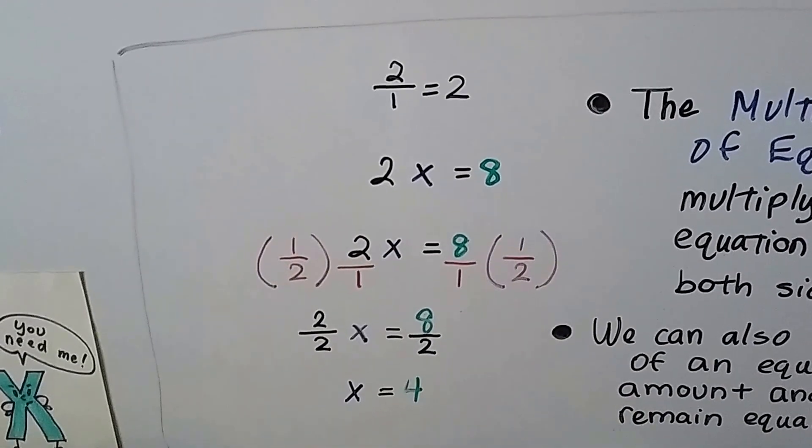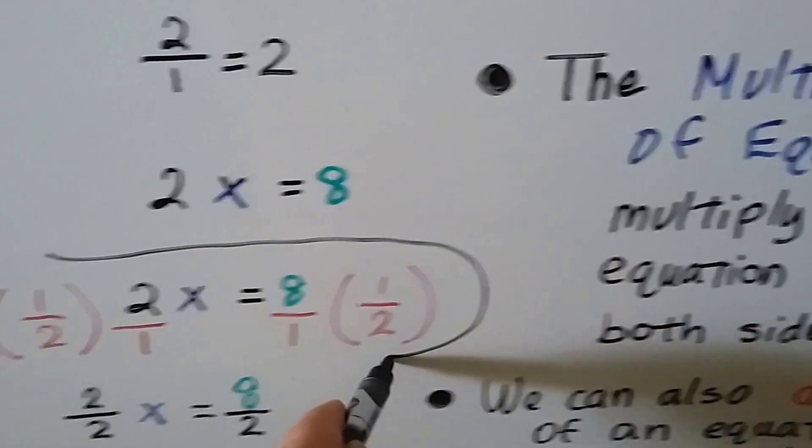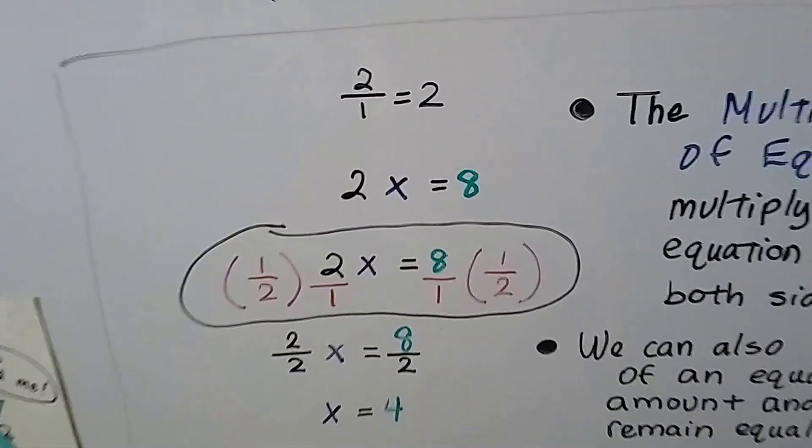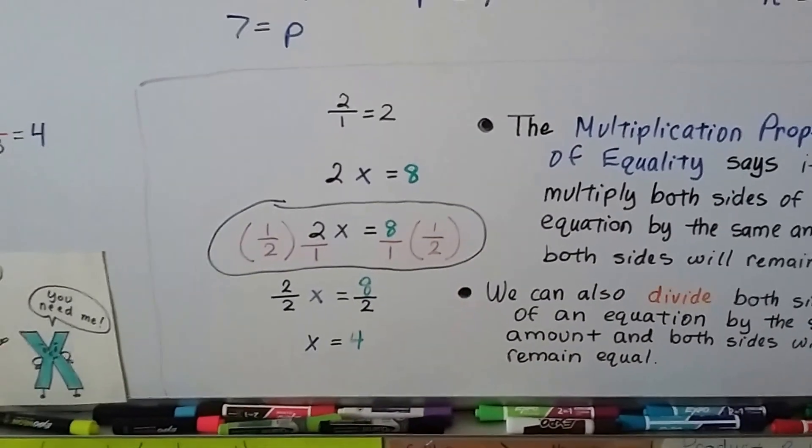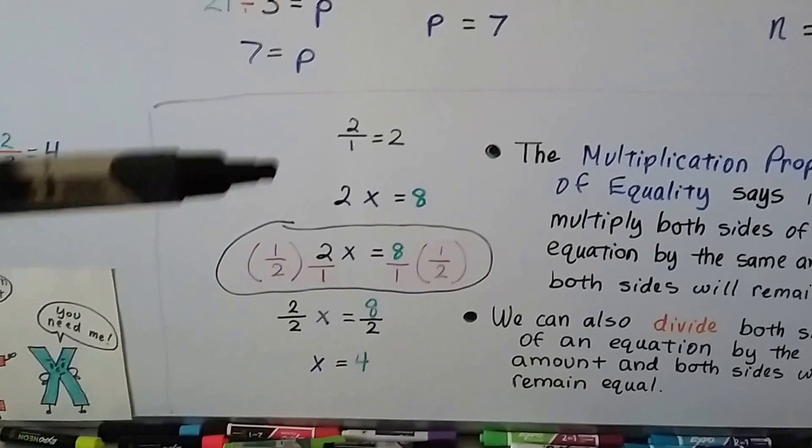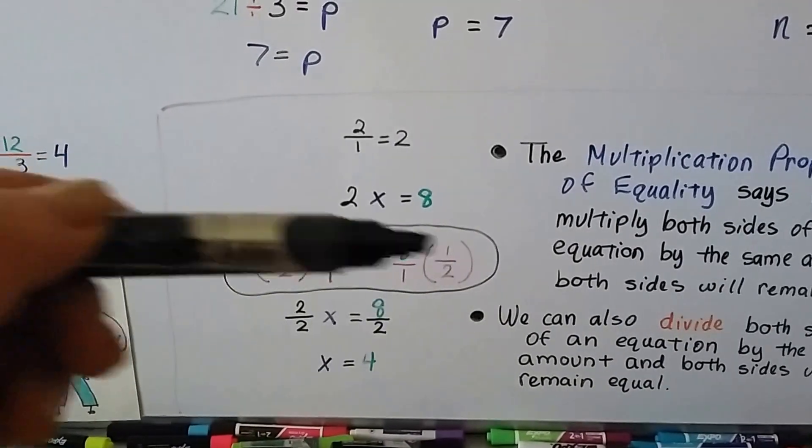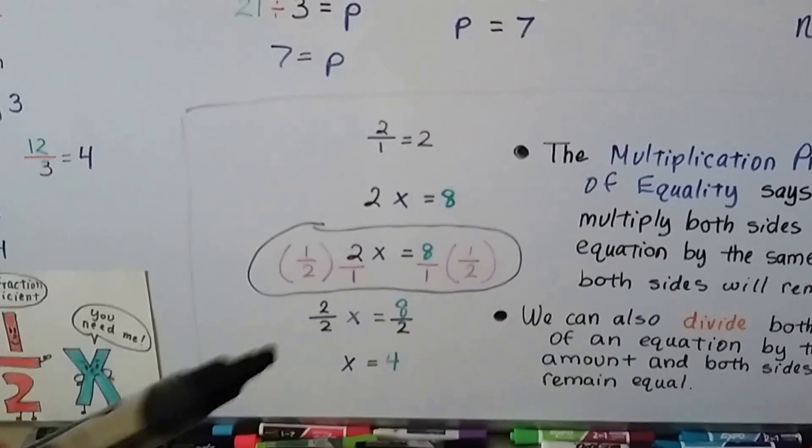So what I did in this video was I skipped this part to save time and went straight into division. So I'm using the multiplication property of equality. I'm just skipping a step because I know what I'm doing and I can go faster now. So instead of multiplying both sides by the reciprocal, I just divide both sides by the coefficient, 2.